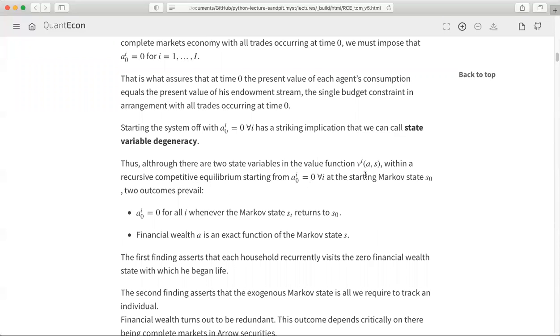The key thing is that there are two state variables in this value function within a recursive competitive equilibrium. Starting at this Markov state S_0, two outcomes are going to prevail. The first is, and we saw this, anytime we revisit the Markov state, everybody's going to go back to zero financial wealth. We're going to return to that initial condition for everybody. The initial condition isn't just the Markov state, but it was that wealth. That's the first implication.